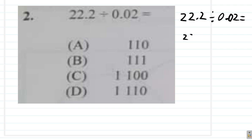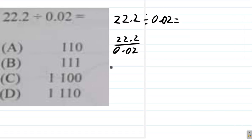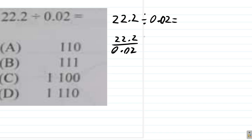Right, this is the same as having 22.2 divided by 0.02 written this way. Now, here, we can multiply the 0.02 in the denominator by a certain number, so we get only whole numbers. We don't have to worry about the points after that.